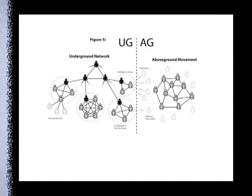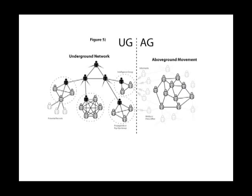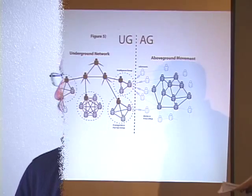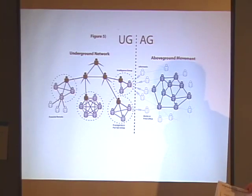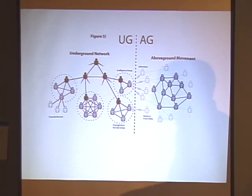I wanted to clarify how some of these groups might actually function, why they might have these different cells, and importantly how underground groups and above-ground groups can work together to maximize each other's effectiveness while still making everyone as safe as possible. On the left side is an underground network like the one we've seen previously.